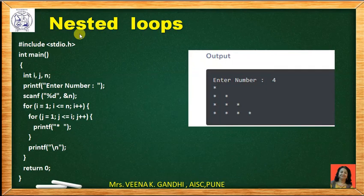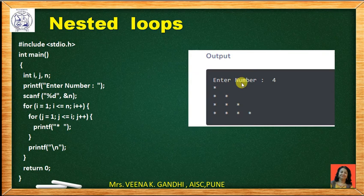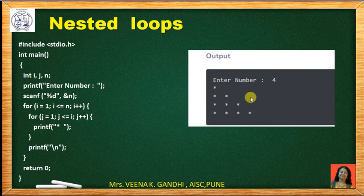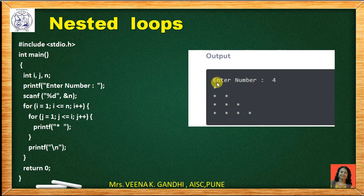Let us see a C program using nested for loops. Here we want to print a pattern of stars. It asks for the number of lines: on the first line it prints one star, on the second line two stars, on the third line three stars, and so on. To print this pattern we require a nested loop — one loop to keep track of the number of lines, and one loop to print the number of stars on each line. So here we define two for loops.